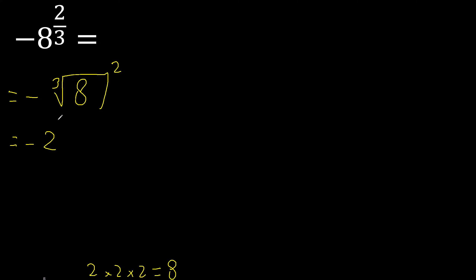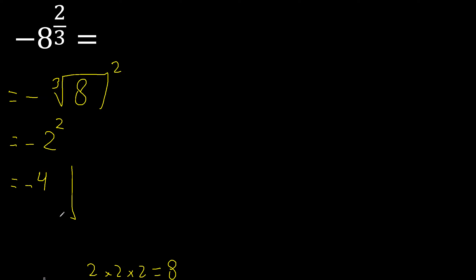Exponent: 2 multiplied 2 times — 2 multiplied by 2 is 4. Minus 4. Finish.